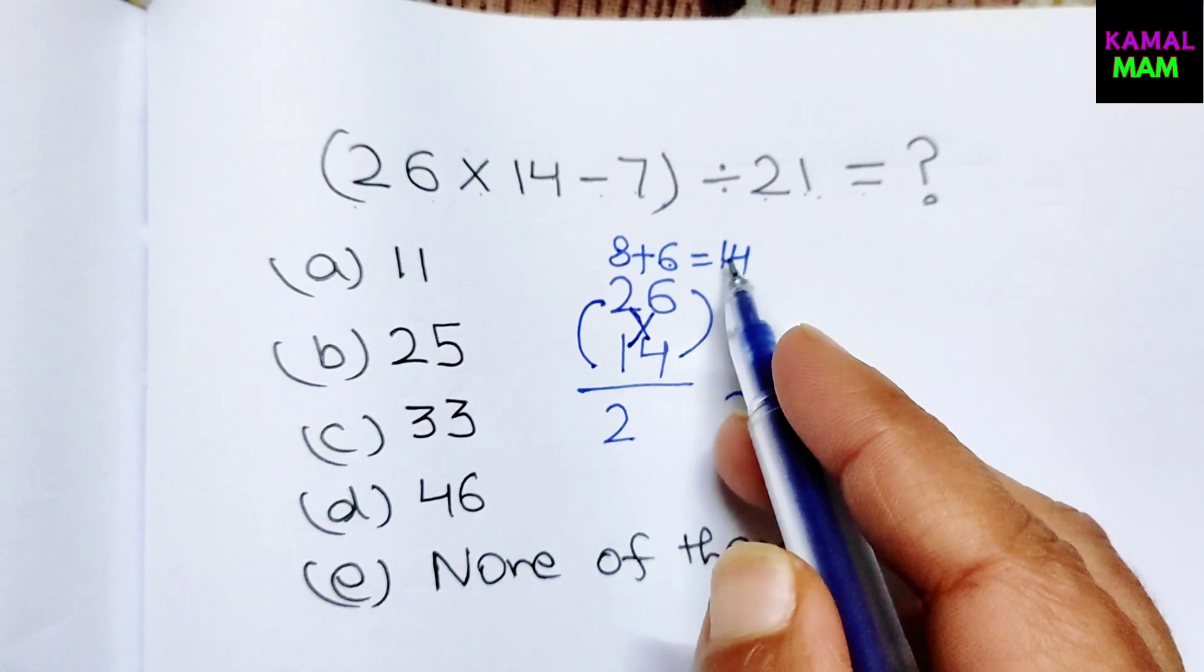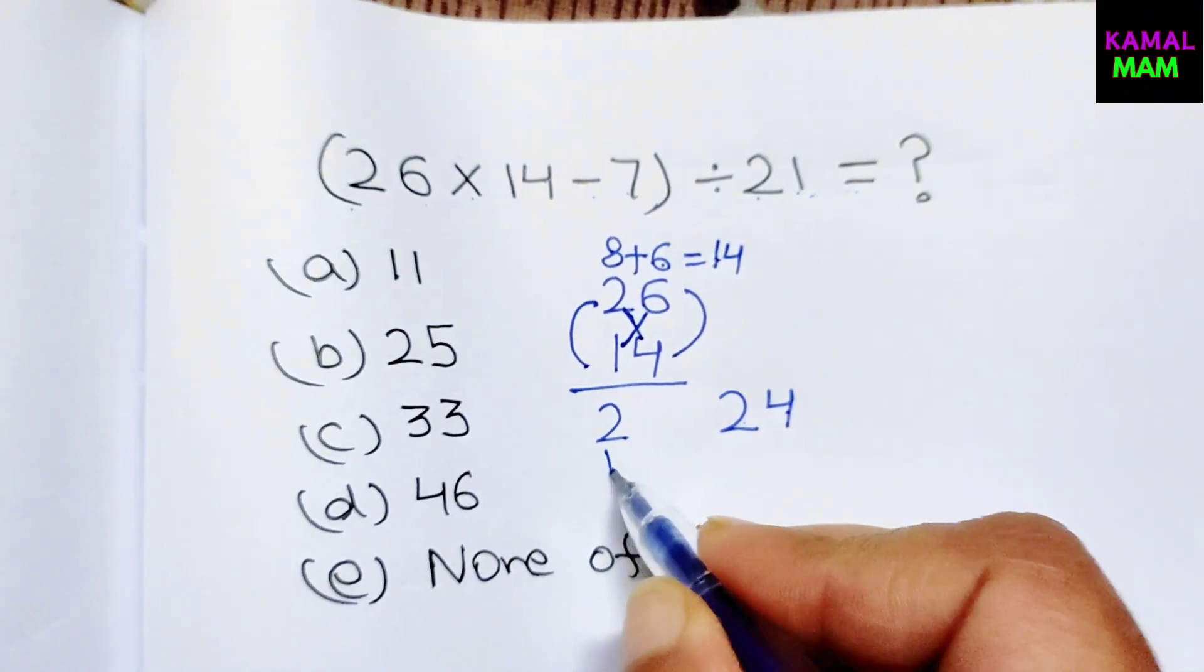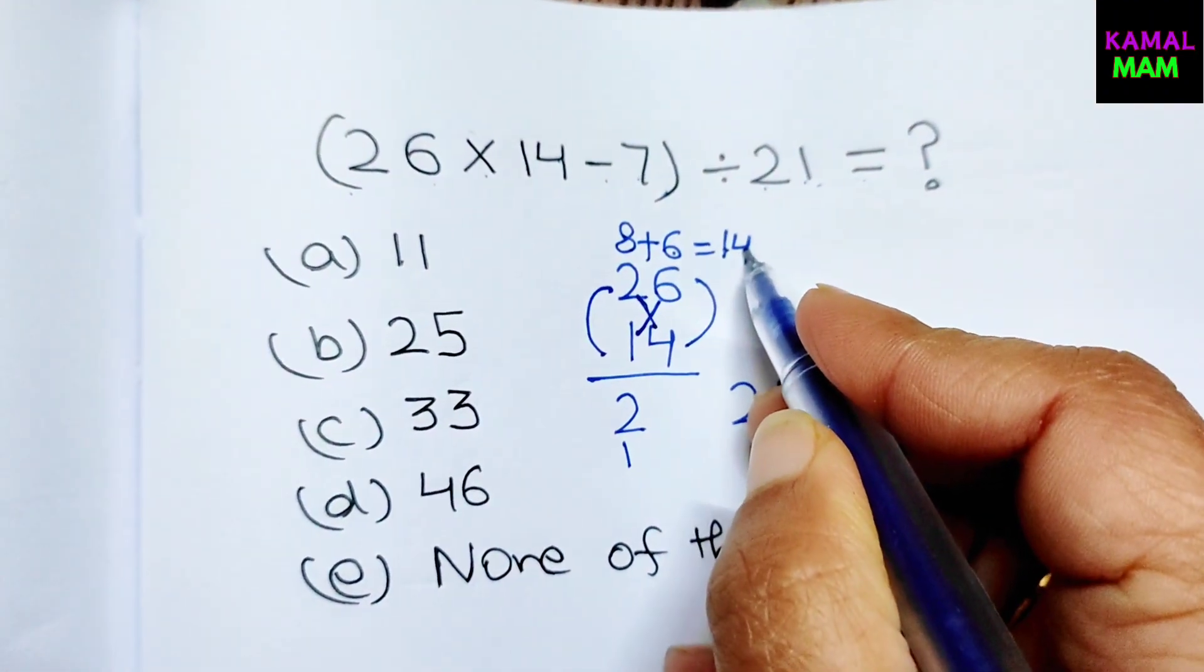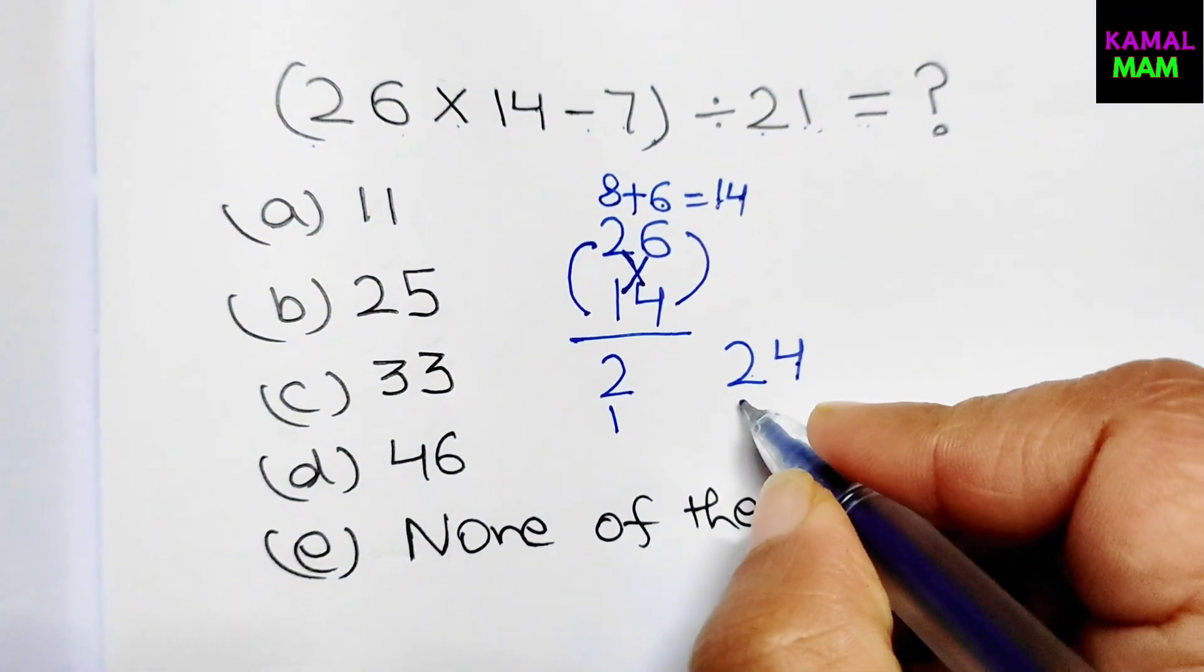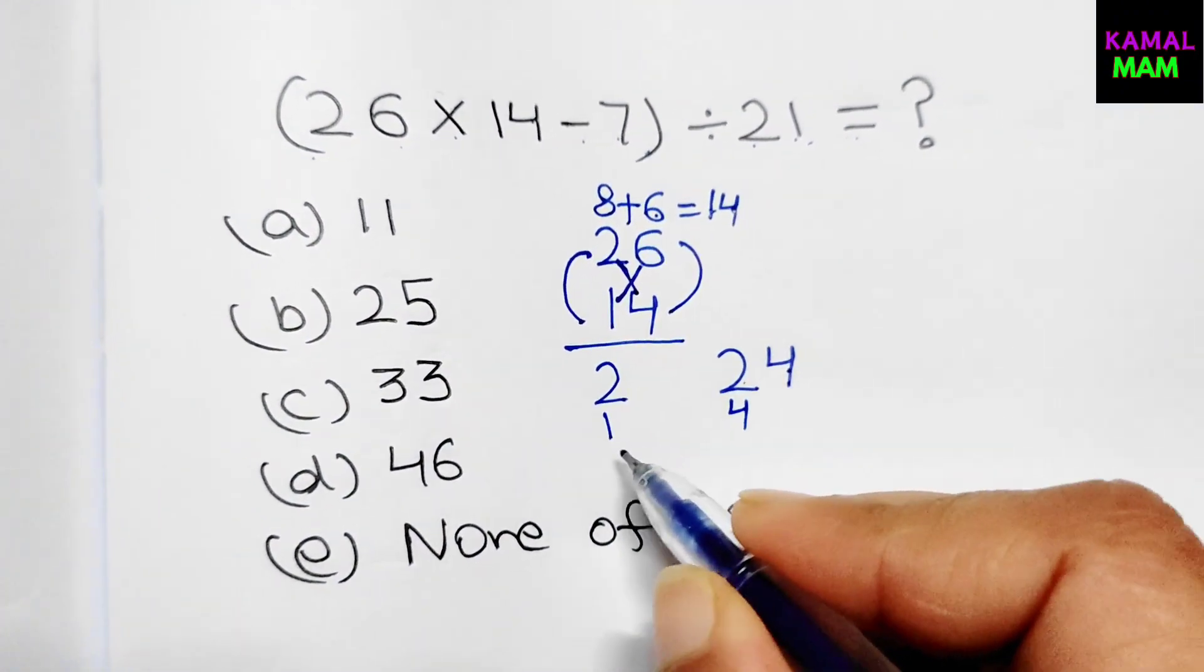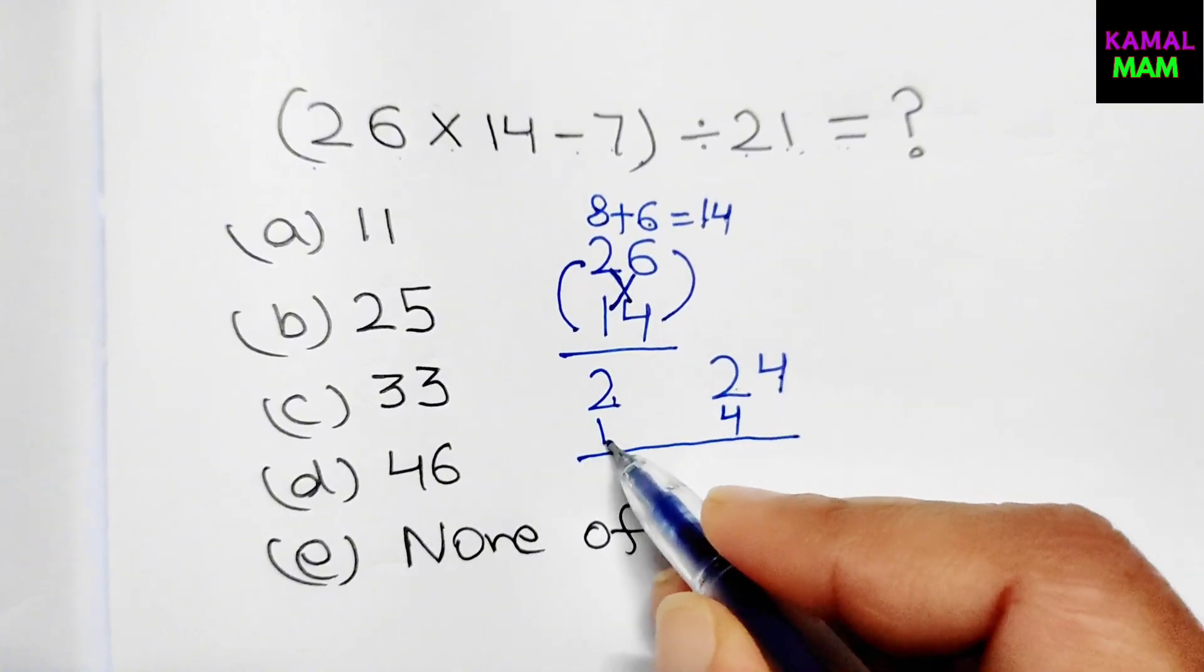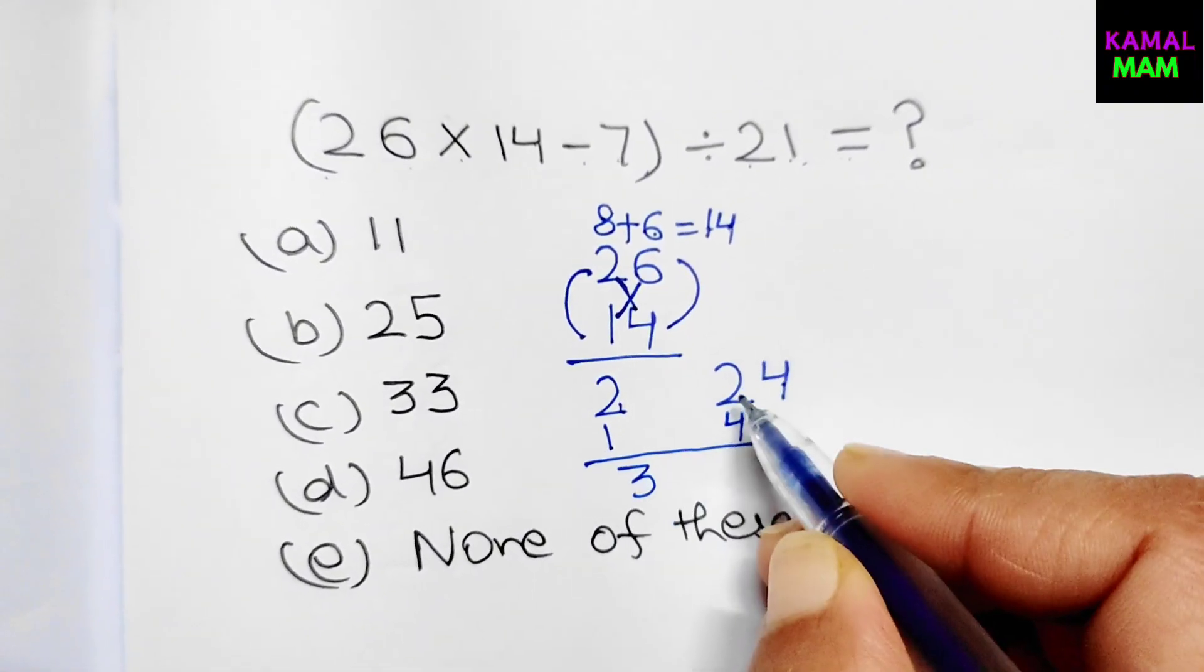So we have to write down 1, the first digit, write it down here separately and the second digit we have to write it down here. Now just add them up.